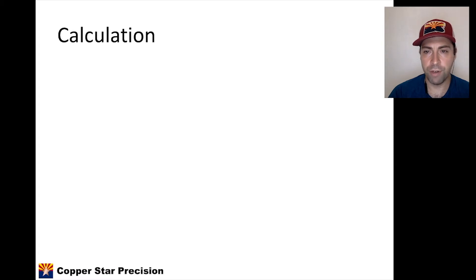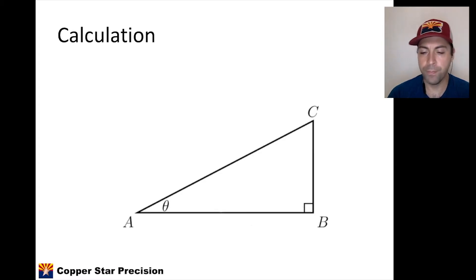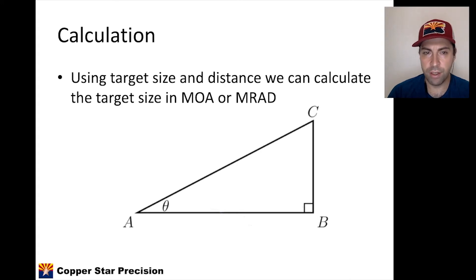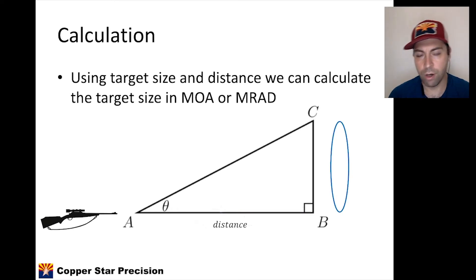Let's talk about the calculation. It's very straightforward. We have that right triangle and some trigonometry again. Using target size and distance we can calculate the target size and convert that into MOA or milliradians. So we have our rifle over there, we have some angle theta, and we have that target in blue, and we have a distance.